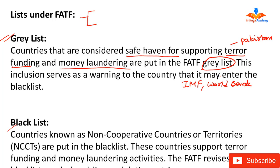If a country is supporting money laundering and terrorist financing but not openly declaring it, it is listed under the grey list. The second list under FATF is the black list. Countries that are not cooperating to prevent or control money laundering and terrorist financing are kept under the black list — they are considered non-cooperative countries with FATF and are seen as completely supporting money laundering and terrorist financing activities.